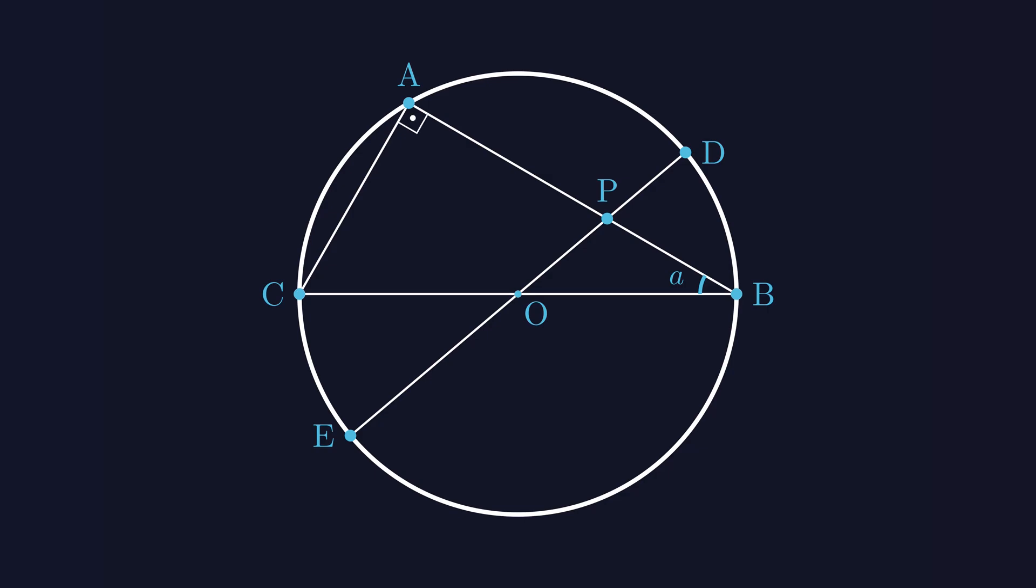Let the radius of the circle be R units. That makes EO equal to R as well. Let's call the length of OP as C. So the segment PD becomes R minus C.